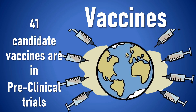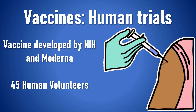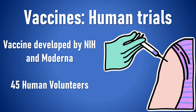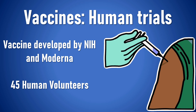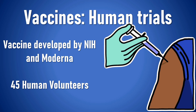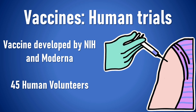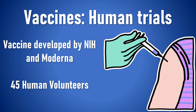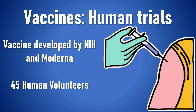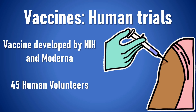Currently, the World Health Organization has published a draft of 41 candidate vaccines in pre-clinical trials. Also, Kaiser Permanente Washington Health Research Institute in Seattle is conducting a human trial funded by the National Institutes of Health. It includes 45 young, healthy volunteers who will receive different doses of the vaccine co-developed by the NIH and Moderna.